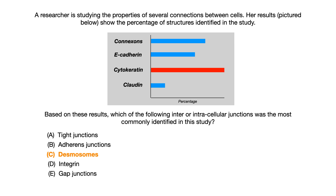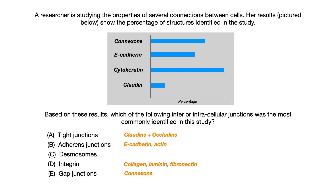Desmosomes contain cytokeratin. But all of the other answer choices — A, B, D, and E — all have some type of association with the data you see in the graph. Choice A, tight junctions, are composed of or involved with claudins plus occludins. Choice B, adherens junctions, are composed of E-cadherin and actin. We already talked about desmosomes since the answer was cytokeratin. Choice D, integrins, contain or interact with collagen, laminin, and fibronectin. And choice E, gap junctions, contain or interact with connexons.